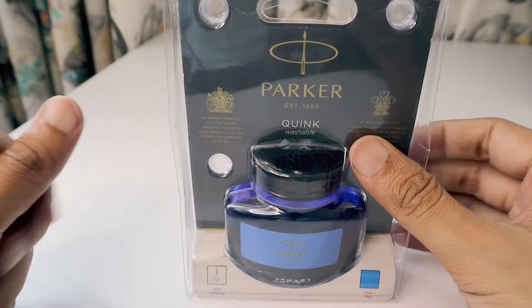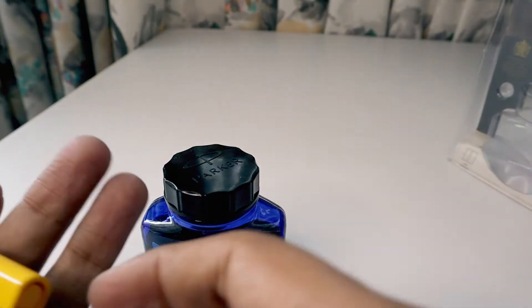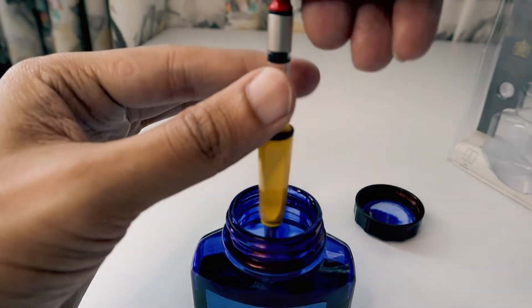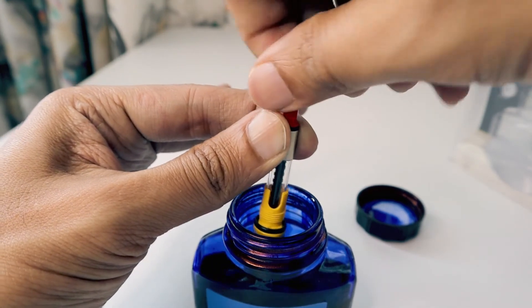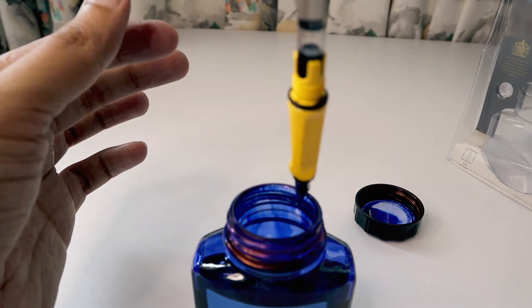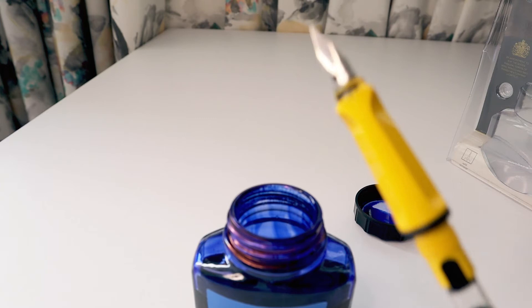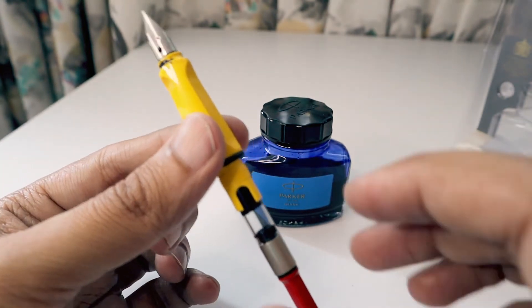So we will fill the ink now and then see how it writes. Though I wanted to buy a Lamy ink, for the time being I have this Parker ink in blue color. If I buy the Lamy ink, it will be in black color. Generally, you should not try out some other inks when you are buying a pen this expensive. You should always buy the same quality ink. So as we're trying to fill it, let's see if it fills. You can see the ink is coming inside. The ink pens are a little bit messy sometimes, so you need to clean it off.